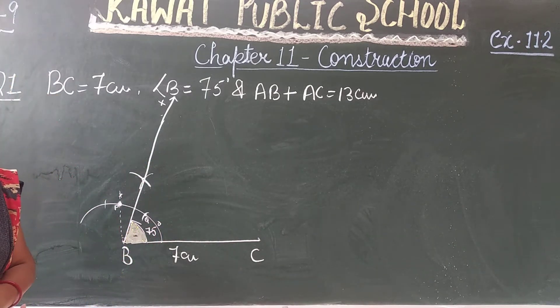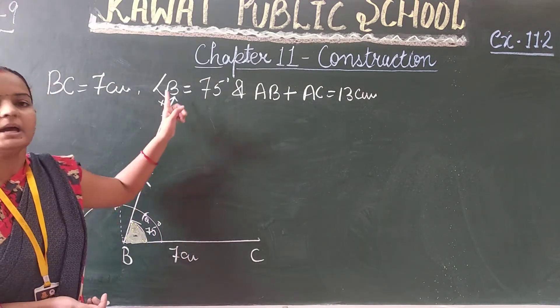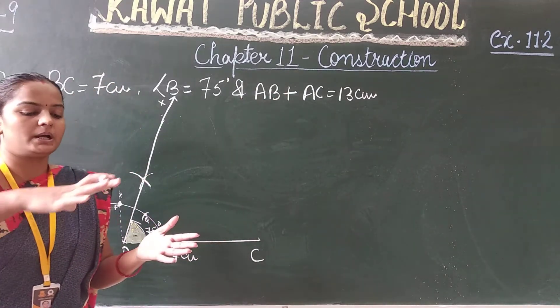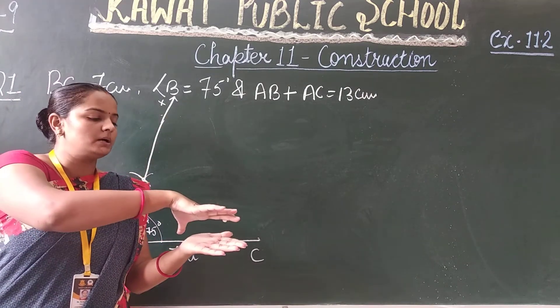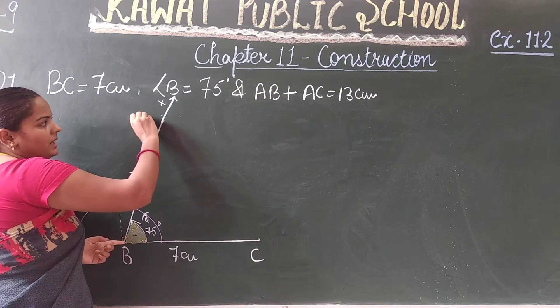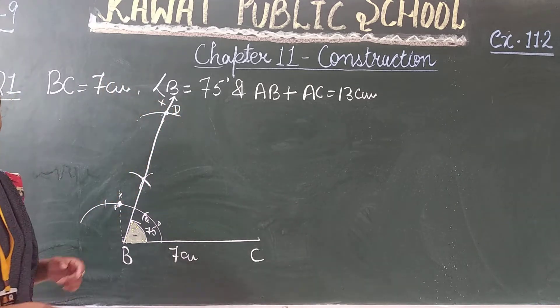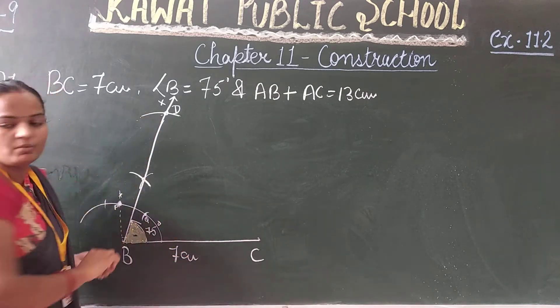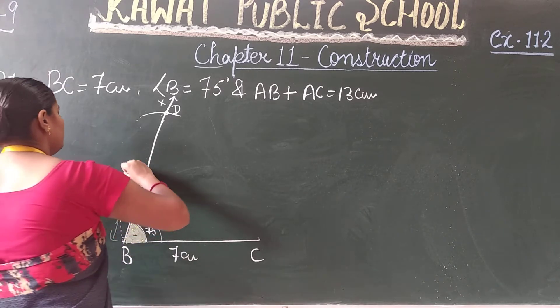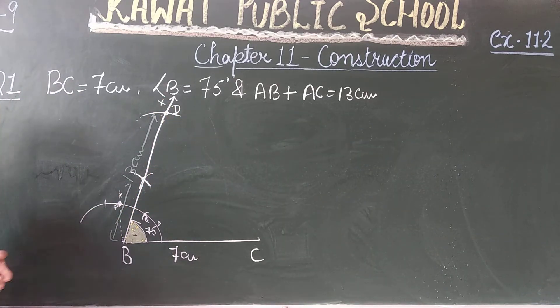Third step: AB plus AC is equal to 13cm. Now what do you do? In the compass, open and cut in the scale 13cm. Measure 13cm from point B. From here cut an arc. Name that point D. This measurement here is 13cm. This length here is BD which is 13cm.